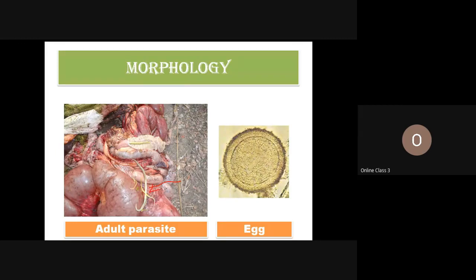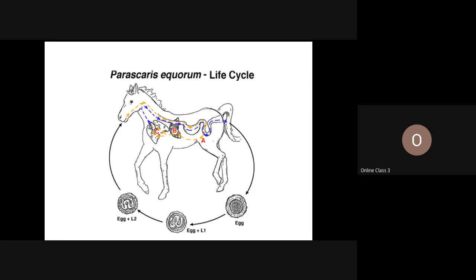This is the egg of Parascaris equorum. You can see there is a thick egg shell covering the unsegmented embryo. Looking at the life cycle: the parasites reside in the small intestine and eggs are passed out into the environment. The larva develops inside the egg shell up to L1 and L2 stage, and the egg is then ingested through drinking water or food.